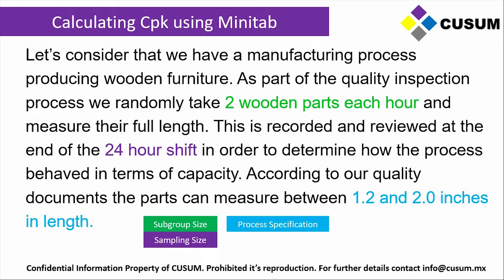Now we're going to go into an example of how to calculate CPK using Minitab. Most of the time you're going to have a sampling size, and that sampling size is going to be distributed randomly across your lot. Let's say you have a manufacturing process producing wooden furniture. As part of the quality inspection process, you randomly take two wooden parts each hour and measure their full length. This is recorded and reviewed at the end of the 24-hour shift in order to determine how the process behaved in terms of capacity. According to our quality documents, the parts can measure between 1.2 and 2 inches in length so that they will be acceptable and will be able to assemble in the next manufacturing section.